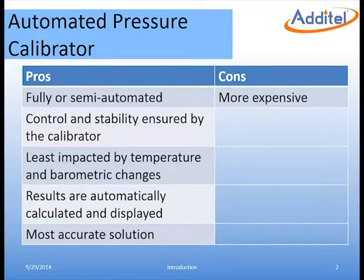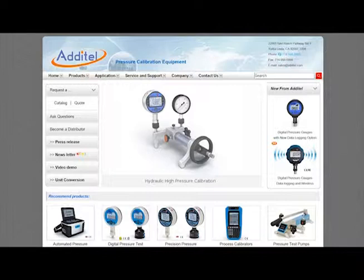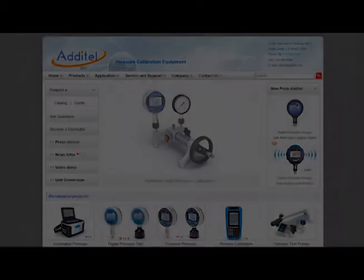If you are to be calibrating a transmitter, the 761 is designed to fully automate the test by reading the electrical output of the transmitter and recording the pressure from the calibrator. We hope that you found this application video instructional and useful. For more information, please visit us at additel.com.